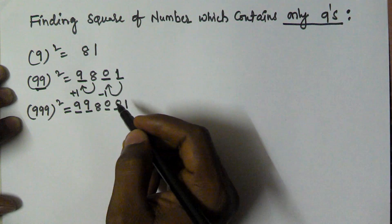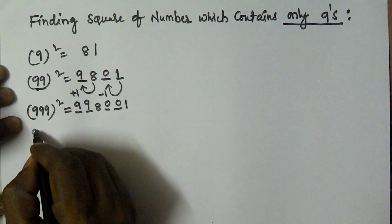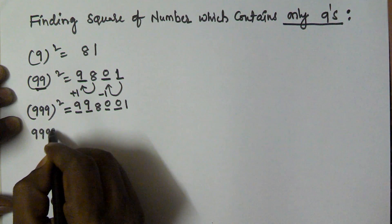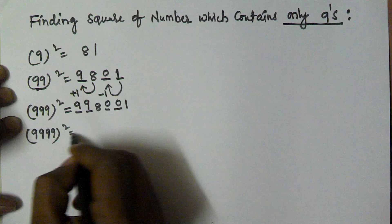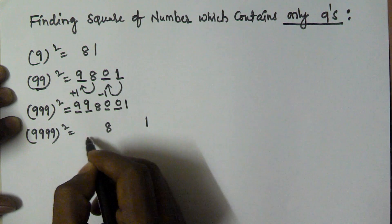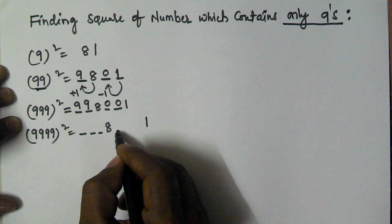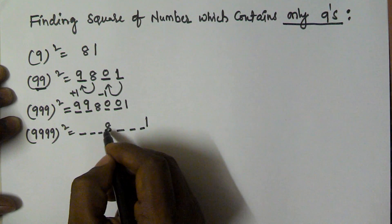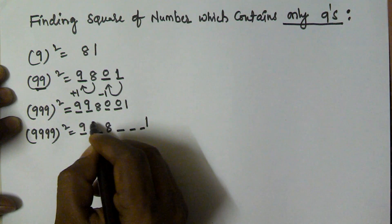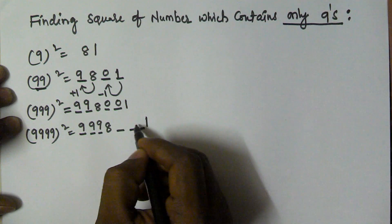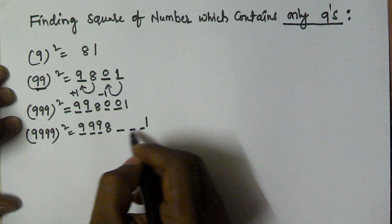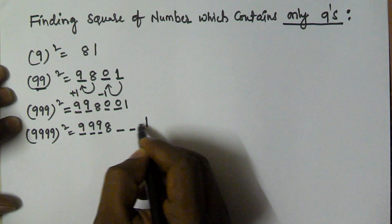In the same manner, 9999 square. 9 square is 81. It contains 4 digits, so I'm taking 3 places here and 3 places here. Plus 1 gives 999. Here I fill up with minus 1 of this number. 1 minus 1 is 0.